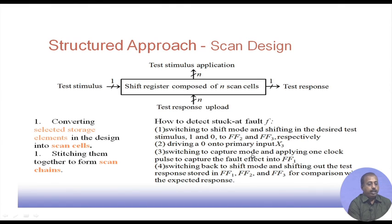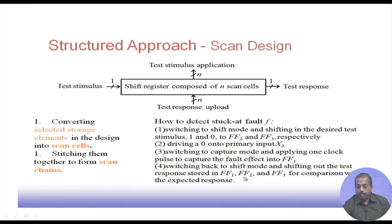Now X3 has 0, flip-flop 2 and flip-flop 3 have their desired values. We switch over to capture mode and apply one clock pulse so that the circuit operates normally and the responses get loaded into the flip-flops. Flip-flops 1, 2, and 3 have their responses captured. Then we go back to shift mode and shift out the response from flip-flops 1, 2, and 3 for comparison with the externally known good response.